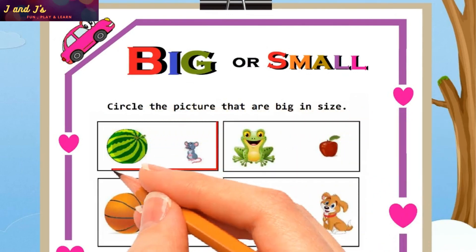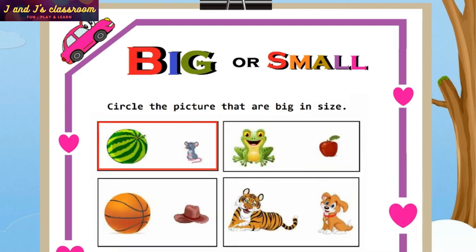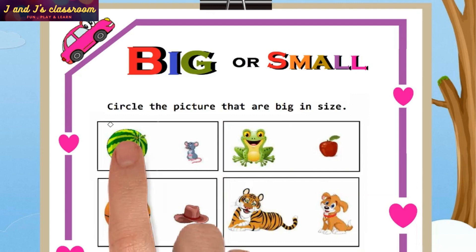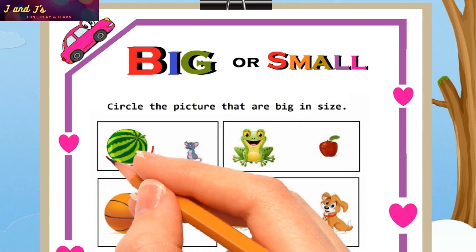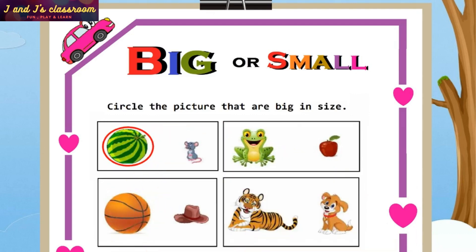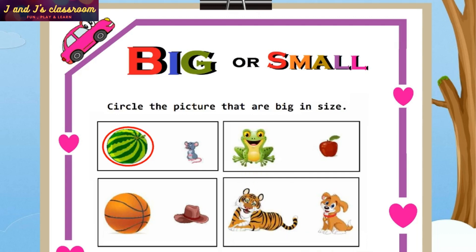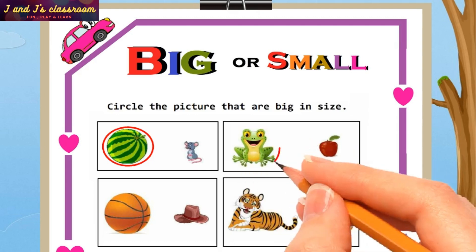See the first box — which one is big: watermelon or rat? Watermelon! Yeah, circle the watermelon. Then the second box — frog and an apple. Which one is big? Frog! Okay, circle the frog.